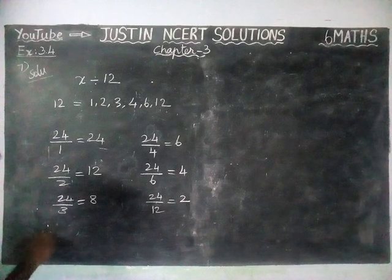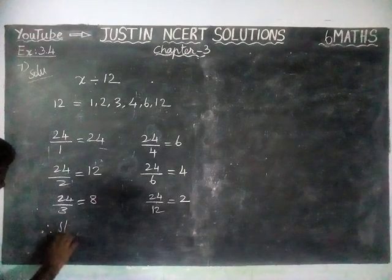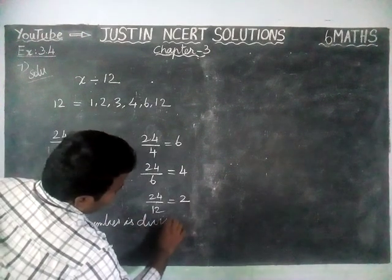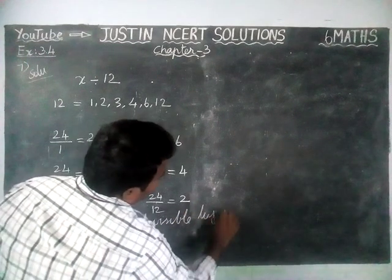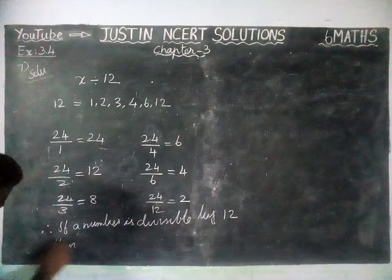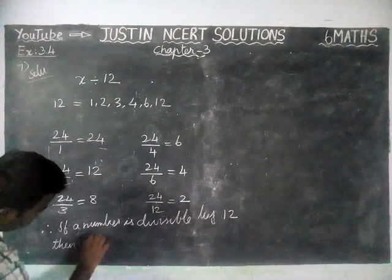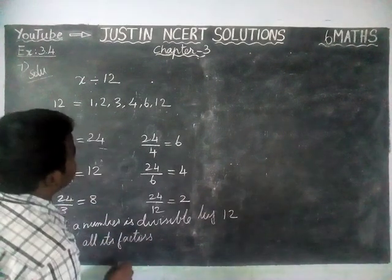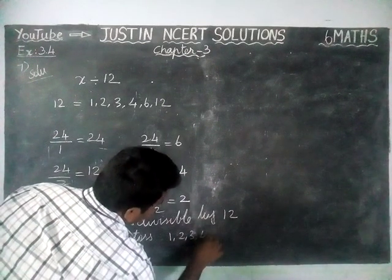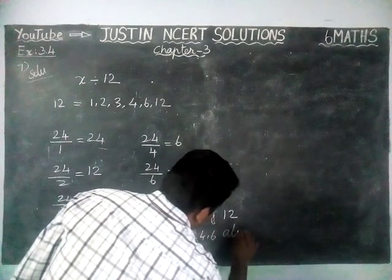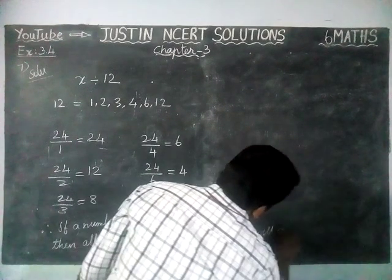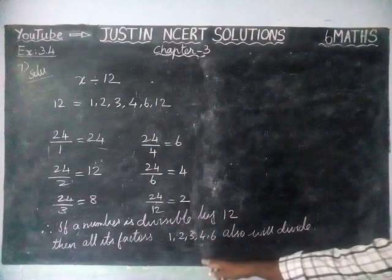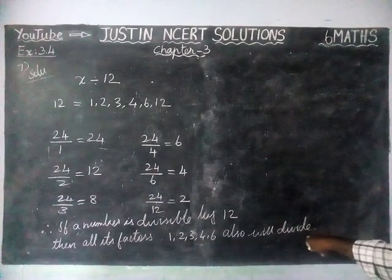Therefore, if a number is divisible by 12, then all its factors — 1, 2, 3, 4, and 6 — will also divide the given number.